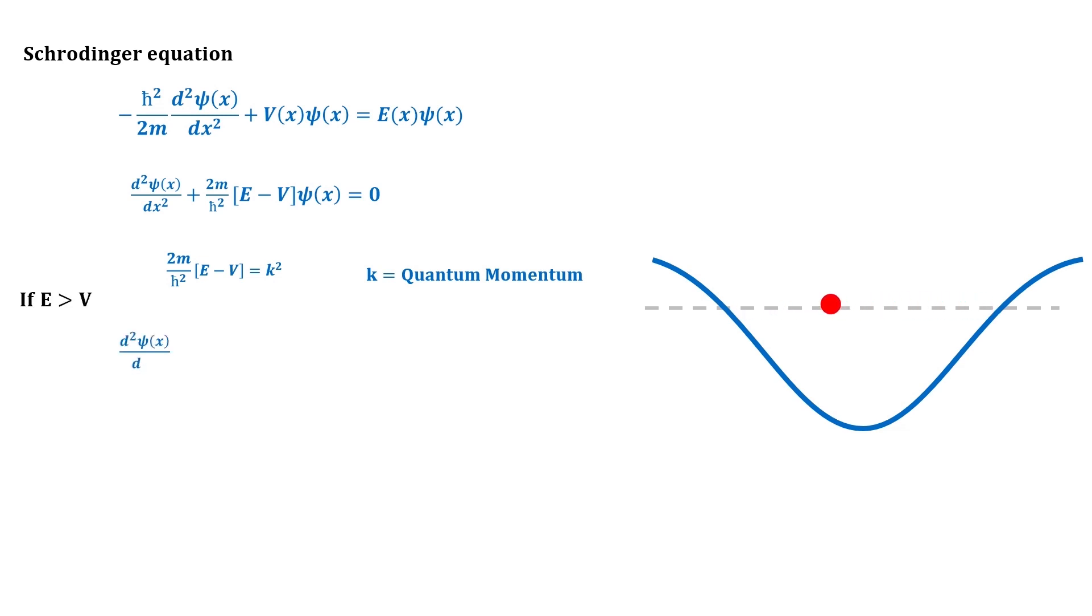Where 2m upon h cross square (E minus V) represents k square. If the energy of the particle is greater than potential, the solution of the equation is Ae to the power plus minus iota kx, where k is the momentum of the particle.